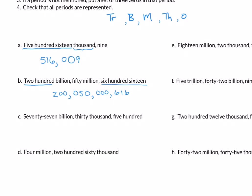Example c: seventy-seven billion, thirty thousand, five hundred. We start with 77, comma. Millions are not mentioned, so we insert three zeros, comma. For thirty thousand: no mention of 'hundred' so zero in left column, 'thirty' has 'ty' so three in middle, no units digit so zero on right — giving 0-3-0, comma. Finally five hundred is 5-0-0.